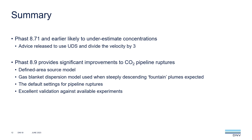To summarise: based on the two CO2 rupture experiments, FAST 8.71 and earlier are likely to underestimate concentrations. We released some interim advice to improve concentrations by using user-defined sources and dividing the initial velocity by a factor of three. In FAST 8.9 we've provided significant improvements to the modelling of these CO2 pipeline ruptures — namely, the defined area source model, which gives a reduced velocity at the crater exit, and the gas blanket dispersion model, which gives a better representation of near-field spreading, particularly when steeply descending plumes are expected. These are now the default settings for CO2 pipeline ruptures and give excellent validation against the available experimental data.